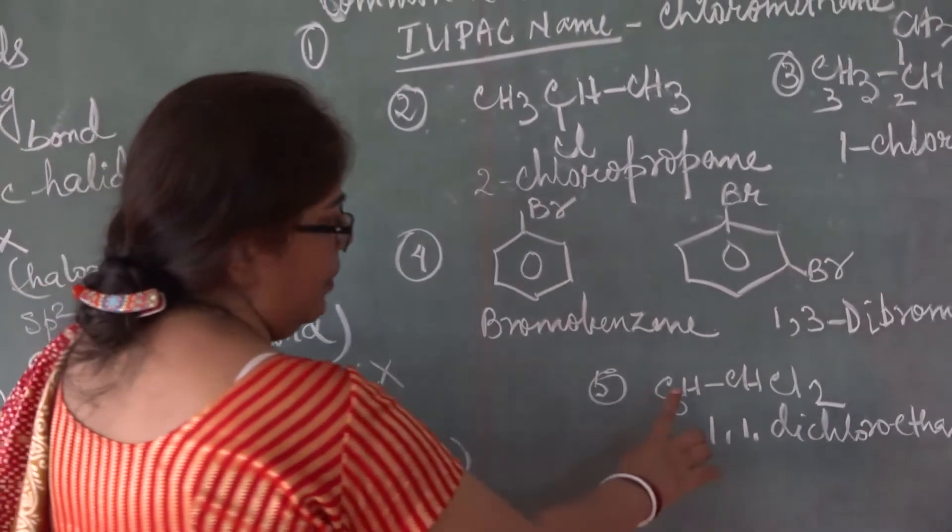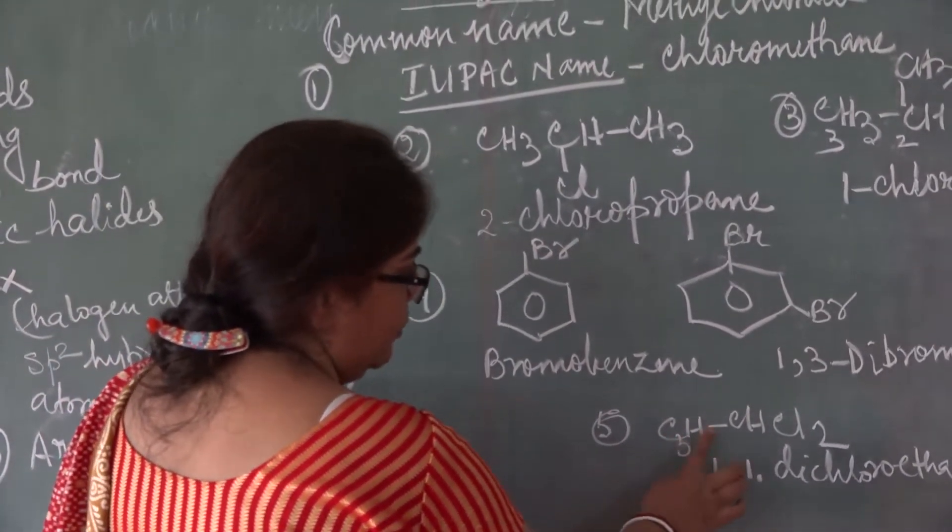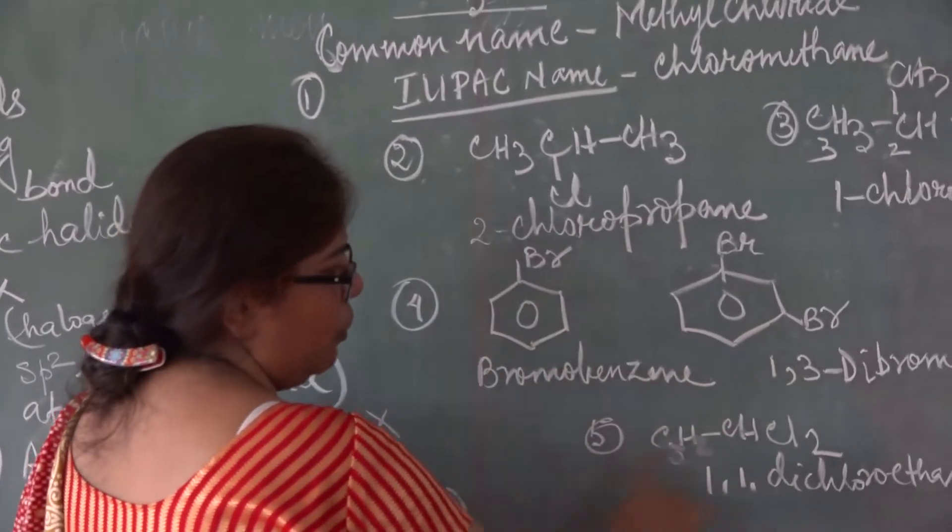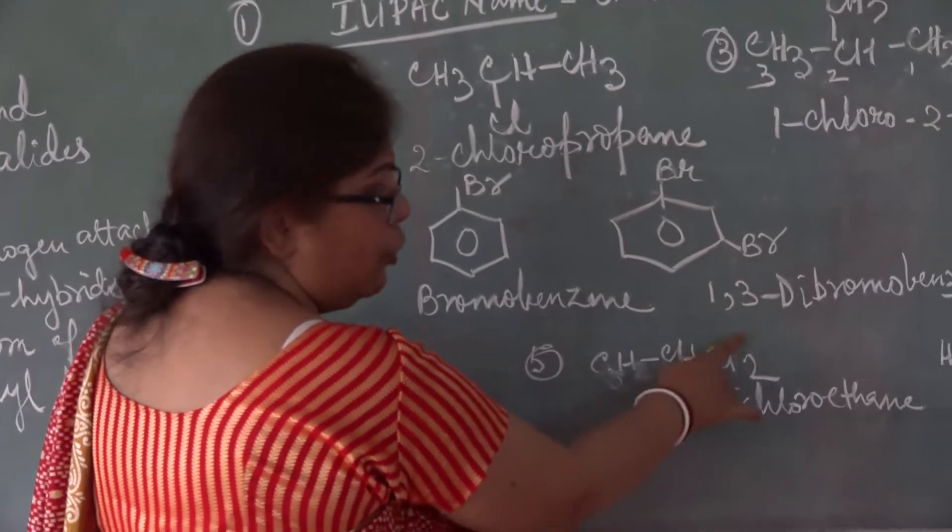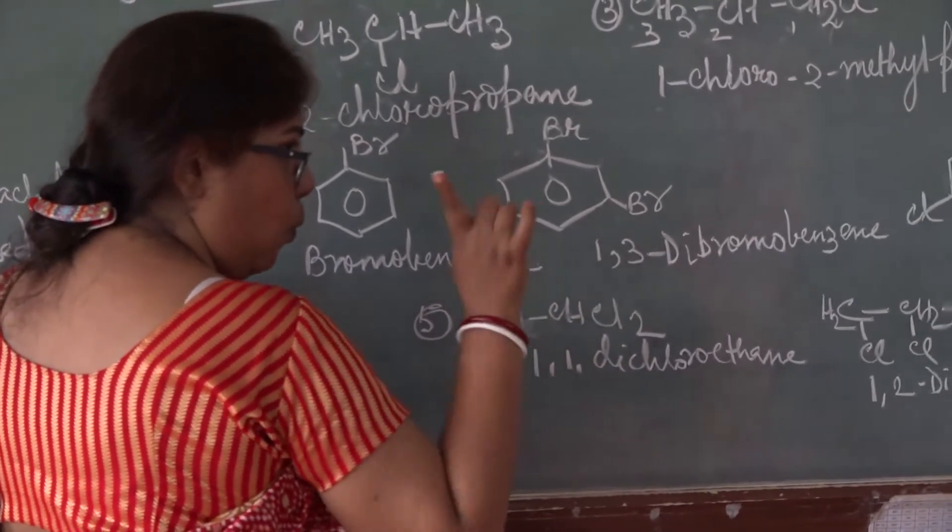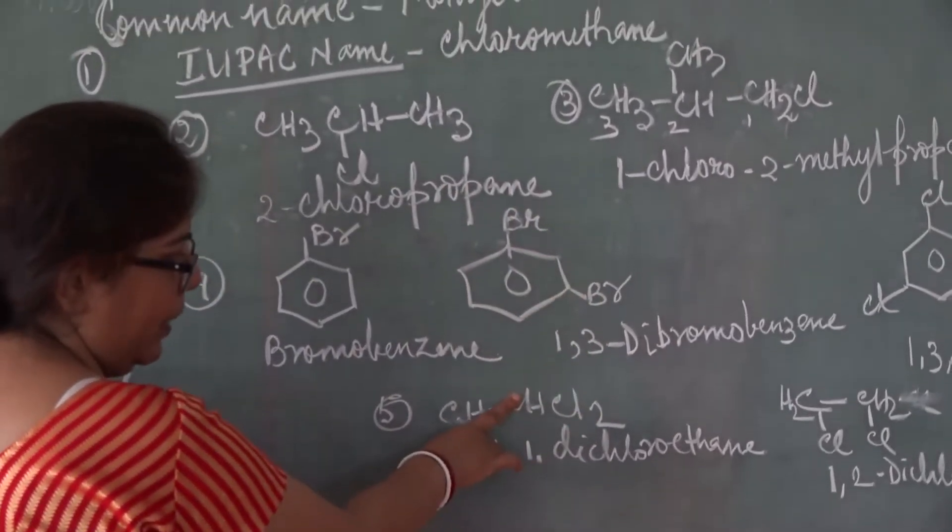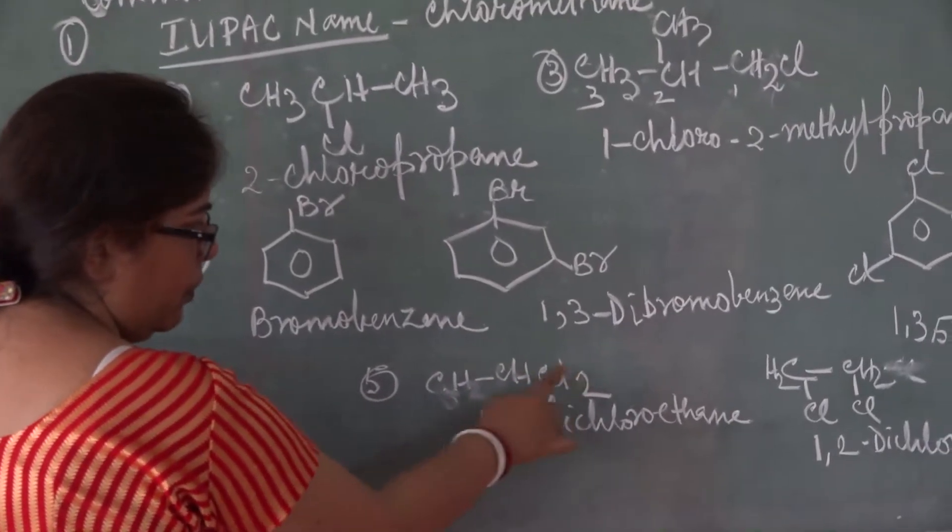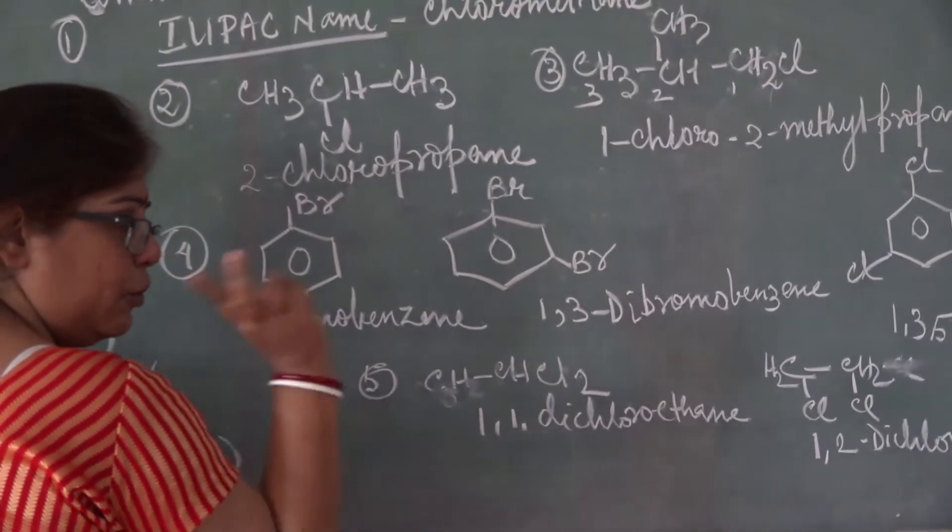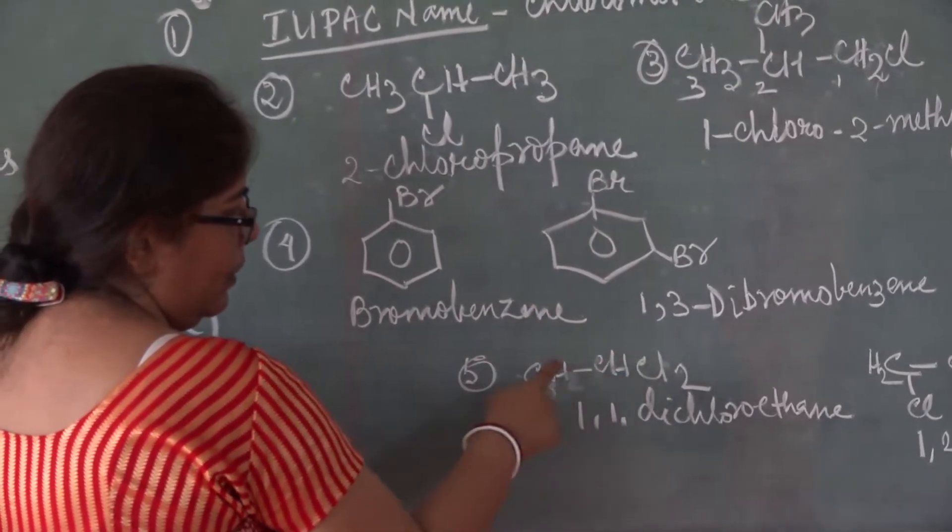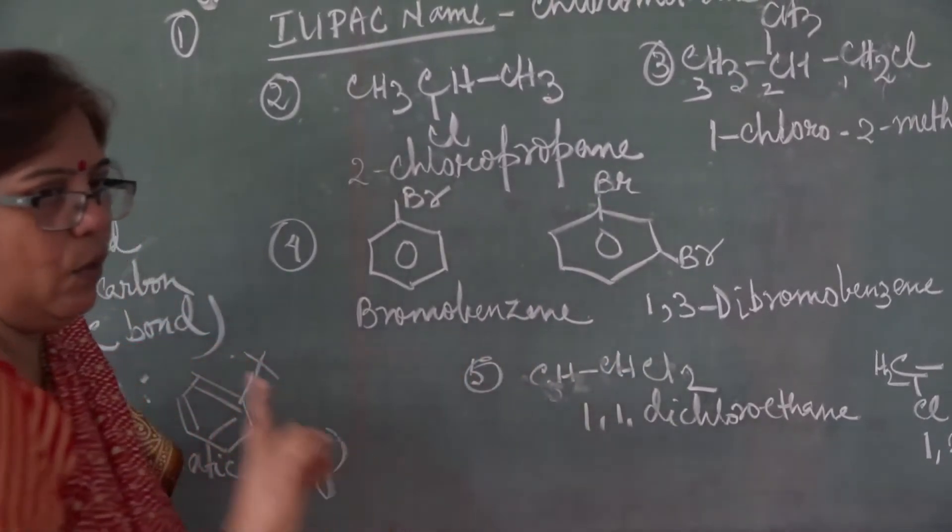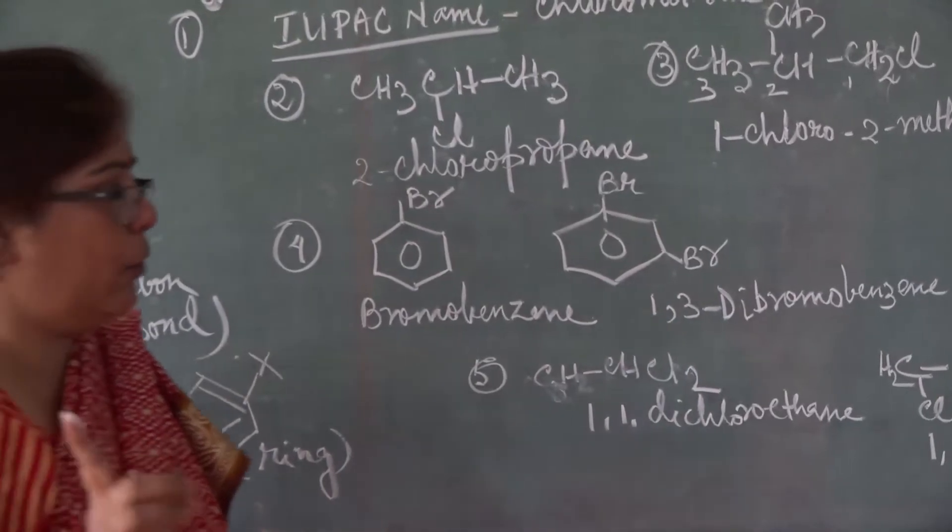So CH2, Cl, CH2, Cl. So what is the name? See in one position, there are two Cl. So what is the name? One, one. Di-chloro. How many total carbons? Two. Derivative will be of ethane. One, one, dichloroethane.